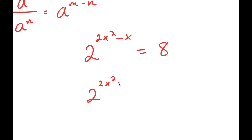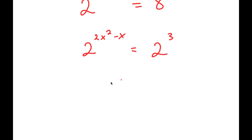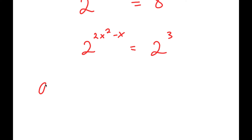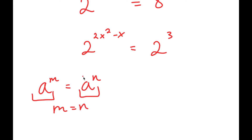Now, 8 I'm going to rewrite as 2 to the power of 3. Another property of exponents is that if I have something in the form a to the power of m is equal to a to the power of n, this means that m is equal to n — in other words, if the bases of two expressions are the same, the exponents are equal to each other as well. So now I have 2x squared minus x is equal to 3.